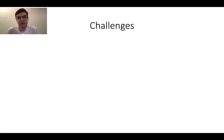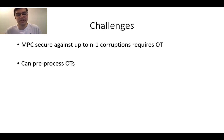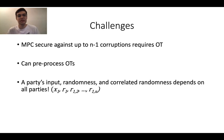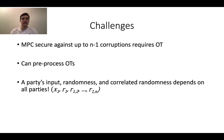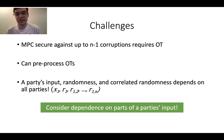There are various challenges. First, MPC security up to n-1 corruptions necessarily requires OT, but we're trying to construct an FE combiner unconditionally without assuming OT. We can get around this by preprocessing the OTs — working in the correlated randomness model, where a party's input is now their input, their randomness, and correlated randomness with each other party. However, this raises another problem: a party's input, randomness, and correlated randomness now depends on all parties' inputs. For example, the string R_{1,2} depends on parties 1 and 2 since it's correlated randomness between them, and R_{1,N} depends on parties 1 and N — so the whole string depends on all parties. It turns out we can get around this by only considering dependence on parts of a party's input instead of their entire input.